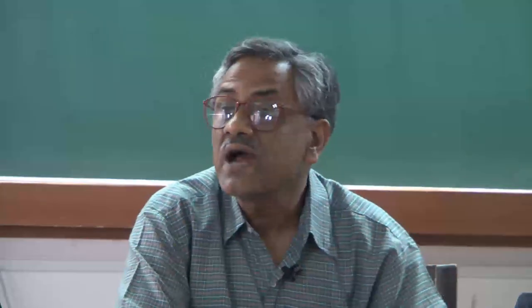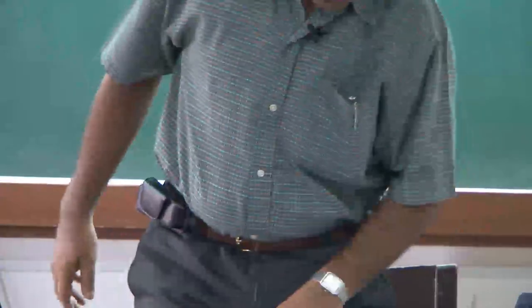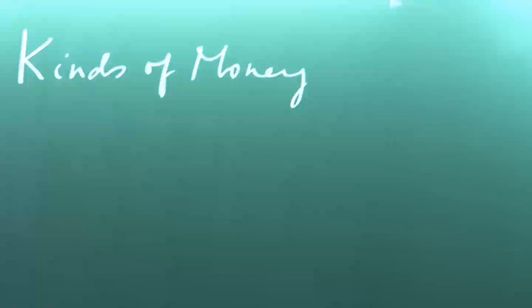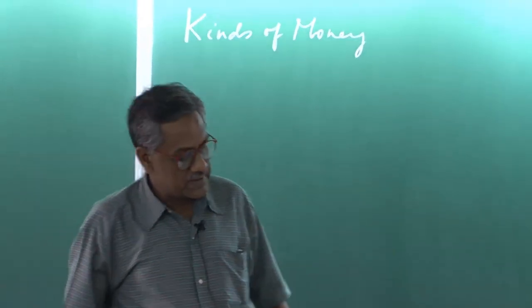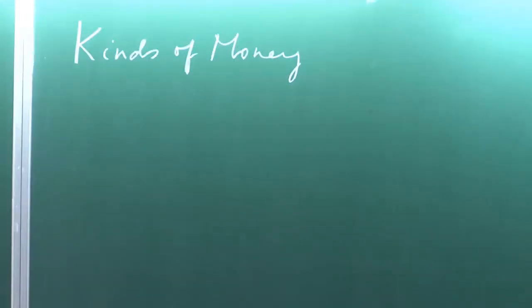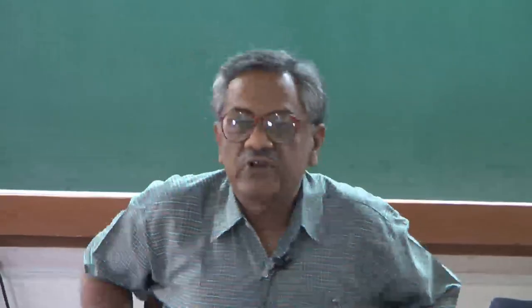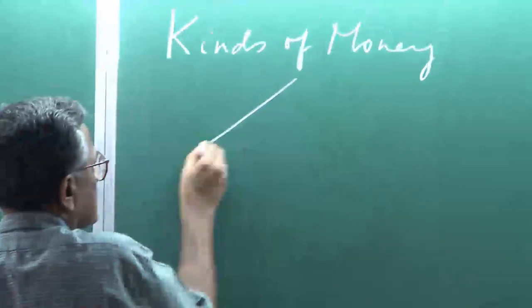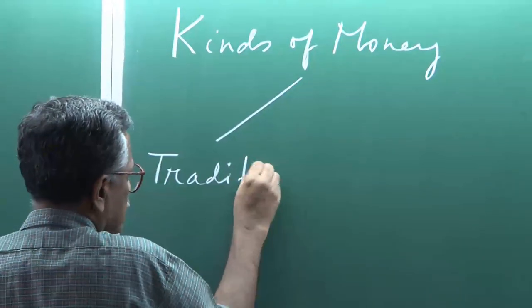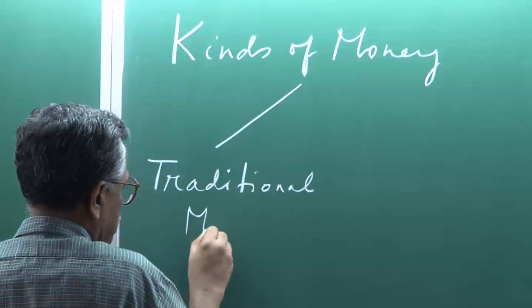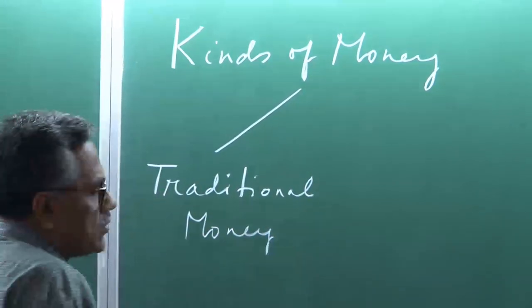What I want to get into now is not only that money has functions like medium of exchange, but also the historical development of money — what I call the kinds of money. I want to talk about the traditional and the modern systems. The sub-topic I will talk about now is kinds of money, and this classification is emerging from the historical development of money.